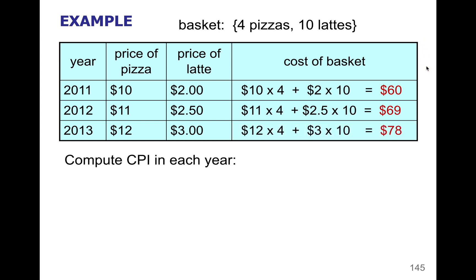Now we're going to compute CPI for each year. In this particular case, I'm going to use 2011 as the base year — you can actually pick any year you want, but using the earliest year makes it a little bit easier. CPI is current year divided by base times 100. For whatever year you pick as the base year, you're going to get a CPI of 100.